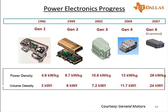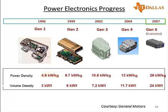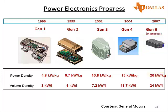Over the years power electronics technology has advanced to a great extent. An inverter from General Motors in 1996 for an electric vehicle had a power density of 4.8 kilowatt per kilogram. By 2007 the same functionality inverter reached 26 kilowatt per kilogram — nearly five times higher power density. The volume density also improved significantly from 3 kilowatt per liter in 1996 to 24 kilowatt per liter in 2007, which is eight times higher.